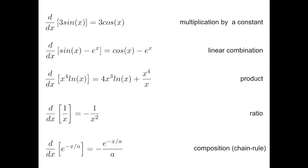And for the composition or chain rule, here I'm providing you as an example the derivative of an exponential of minus x divided by a, where a is a constant. So you take the derivative of the outer function, which is the derivative of an exponential, which remains the same, e to the minus x divided by a, and then you apply the derivative to the argument, which is minus 1 divided by a.